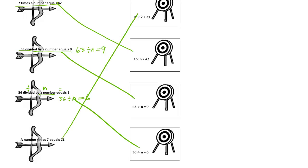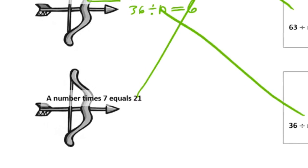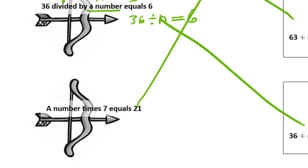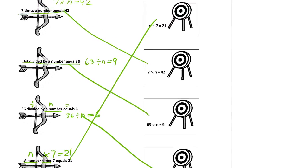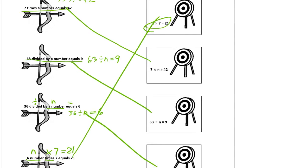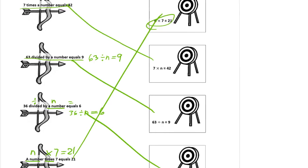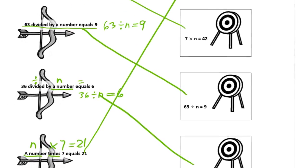And our last one we know is going to match up. I'm going to finish it anyway. A number, which is n, times 7 equals 21. Does it match? Yep. Just to make sure, because sometimes they give you ones where they don't all match.